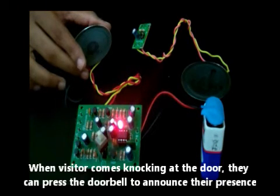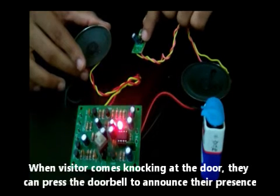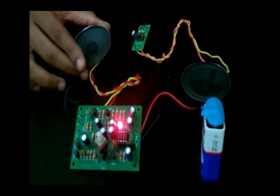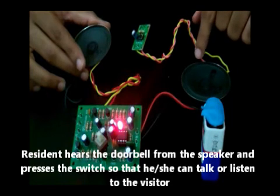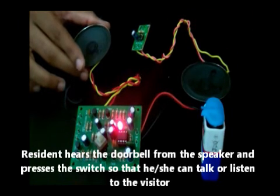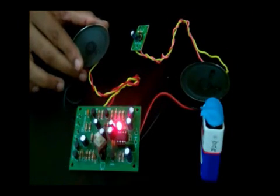When a visitor comes knocking at the door, they can press the doorbell to announce their presence. The resident hears the doorbell from speaker two and presses the switch such that he or she is able to talk or listen to the visitor.